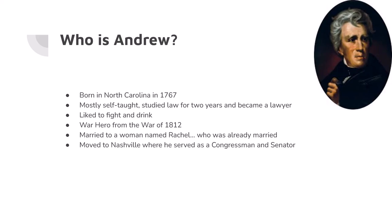Jackson was married to a woman named Rachel. She was married before she met Andrew Jackson — her first husband abused her and her kids, so Rachel left and moved in with Andrew Jackson and his mother. Jackson, being the lawyer he was, sent papers to the husband to get him to agree to a divorce. Andrew and Rachel got married, but it turns out husband number one never actually signed the paperwork, so Rachel was married to two men. That controversy followed Andrew Jackson throughout much of his political career.